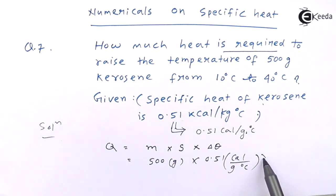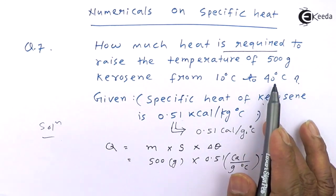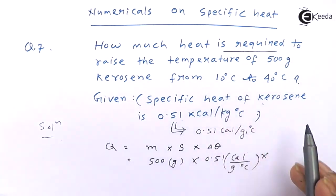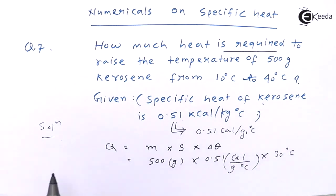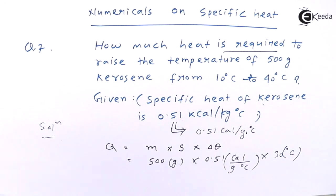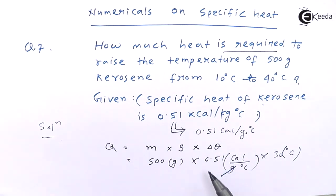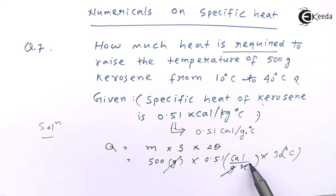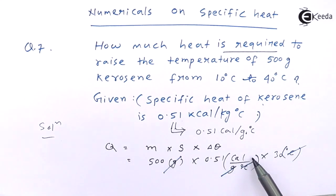So, the change in temperature is 40 minus 10, that is 30 degree centigrade. We will cancel out the numbers and also the units. This gram and this gram cancel. This degree centigrade and this degree centigrade will cancel. Only kilocalories are left.